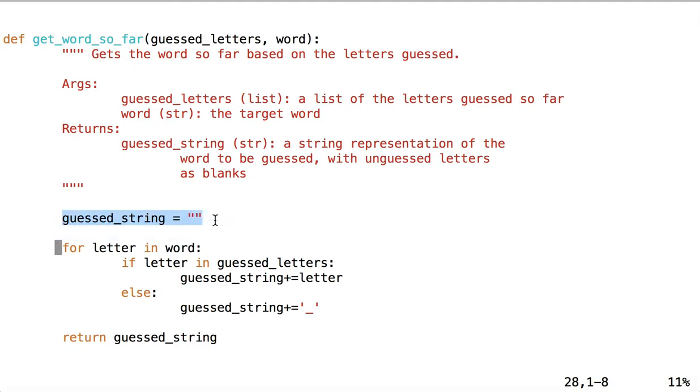So we start this method by initializing the return string as the empty string, and we're going to loop over the letters in the word. So for every letter in the target word, if the letter is in the list guessed letters, then we will append that letter to the guessed string. If that letter has not been guessed, then we will append a blank to the guessed string. And so we're now returning this string, which is comprised of either letters or blanks. Well, it's comprised of both letters and blanks, depending on whether or not the letter has been guessed.